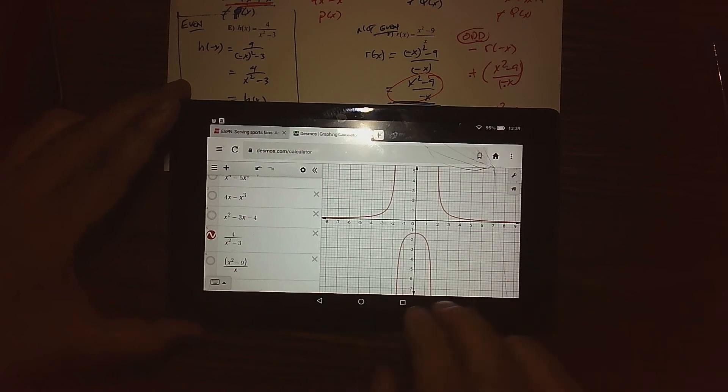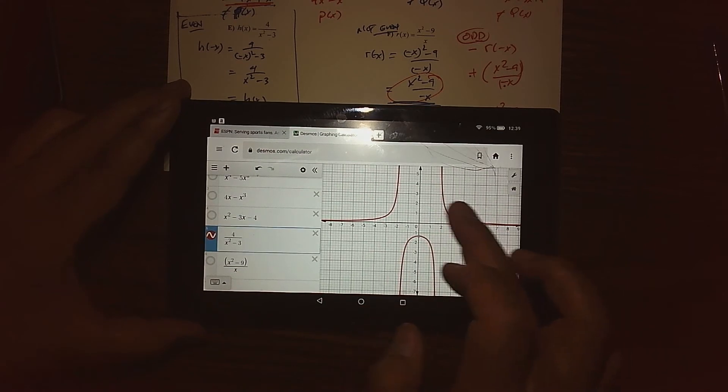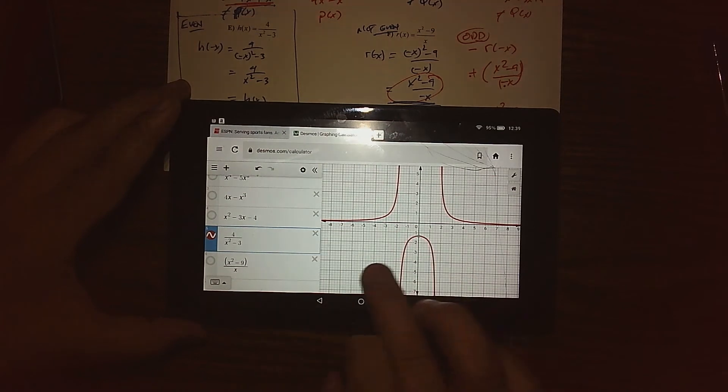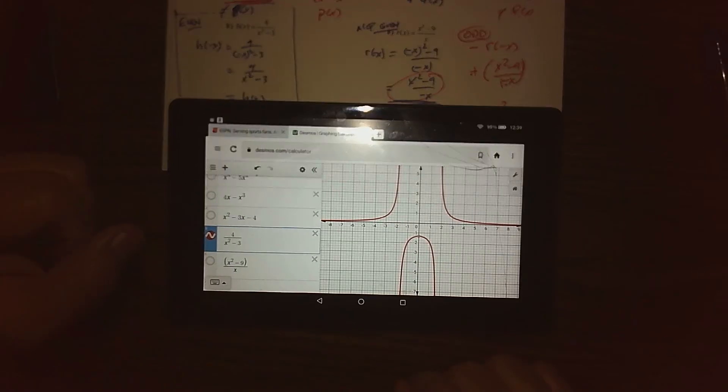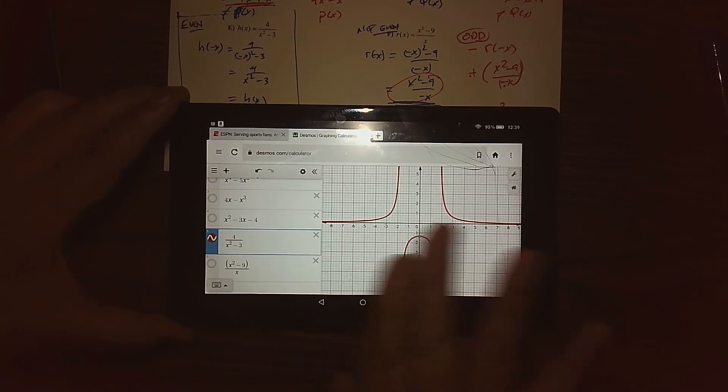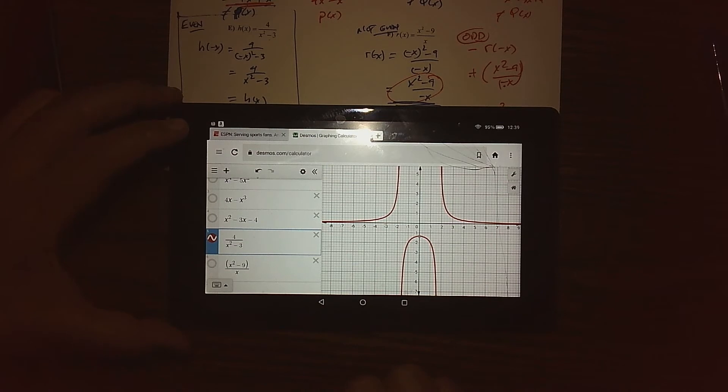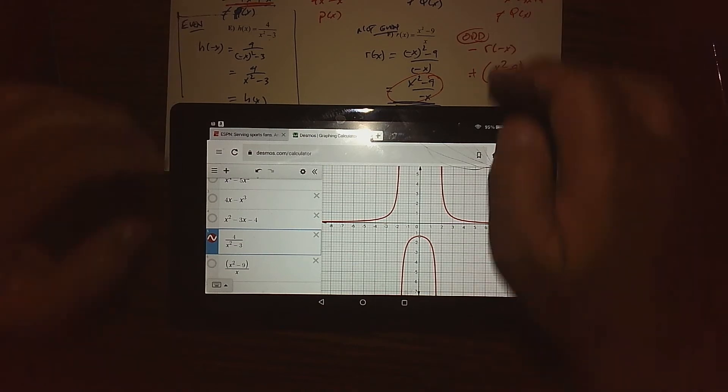But we do see definitely that this part here looks like that part over there, and we have the symmetry throughout. We also have some vertical asymptotes we'll get to, but it definitely is symmetric about the y-axis as proven, so it is even.